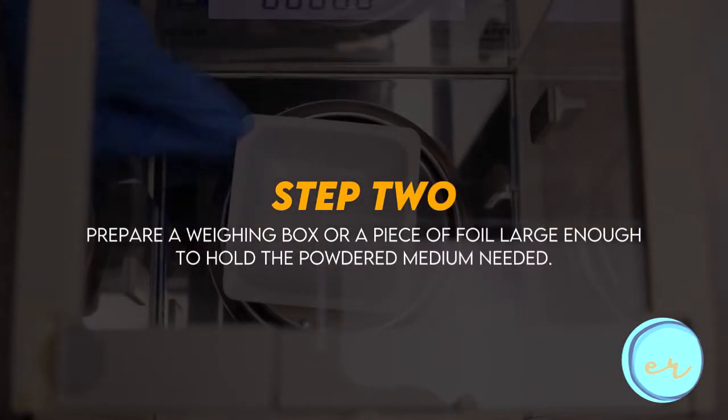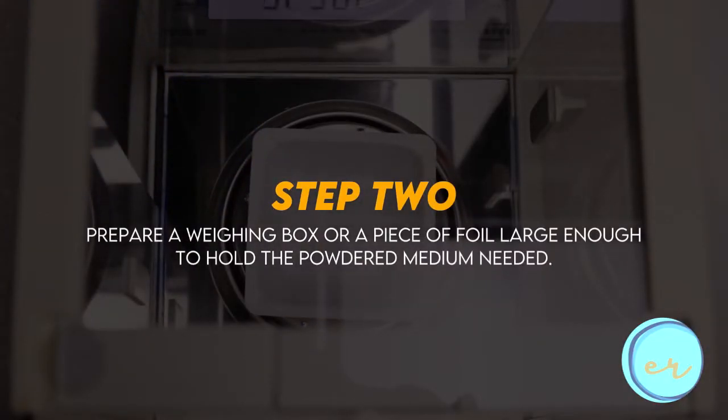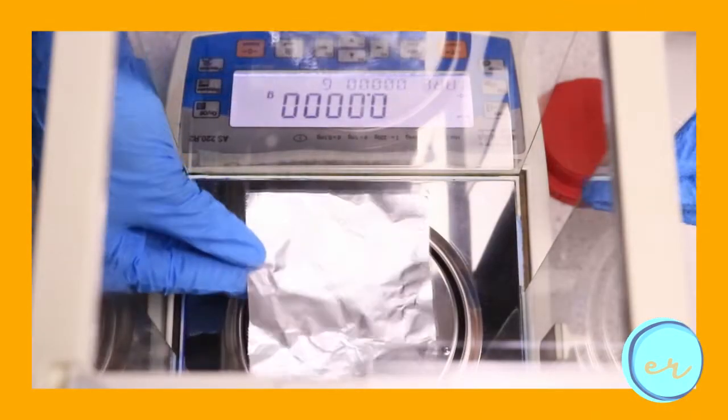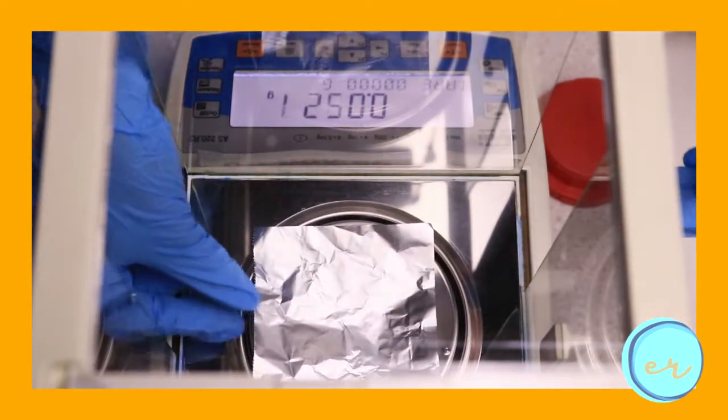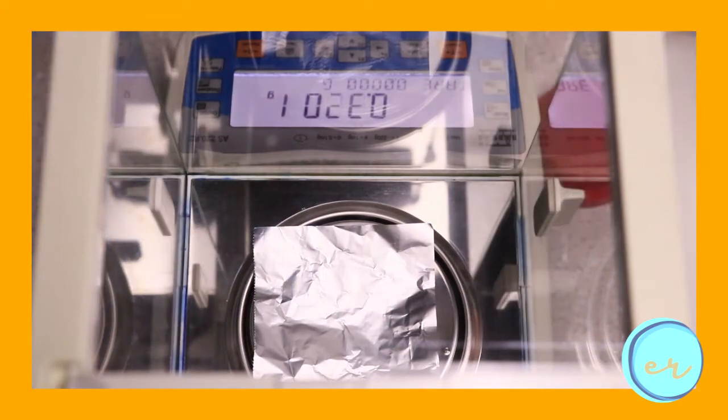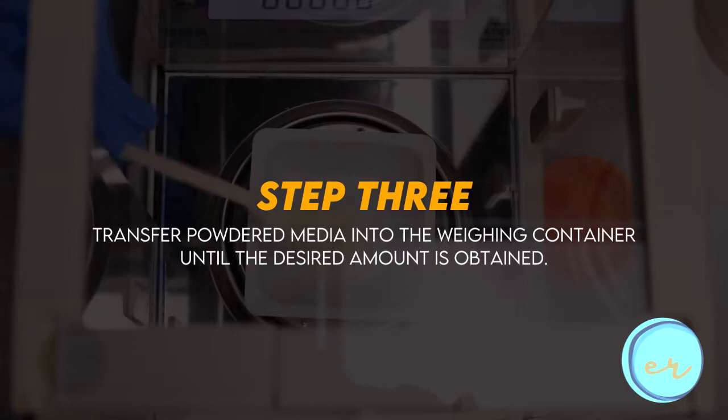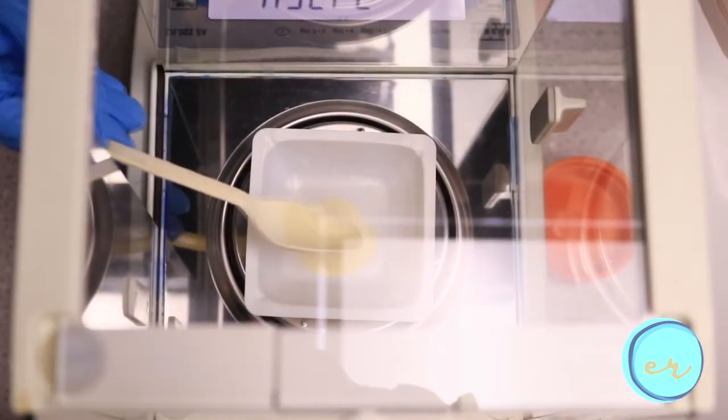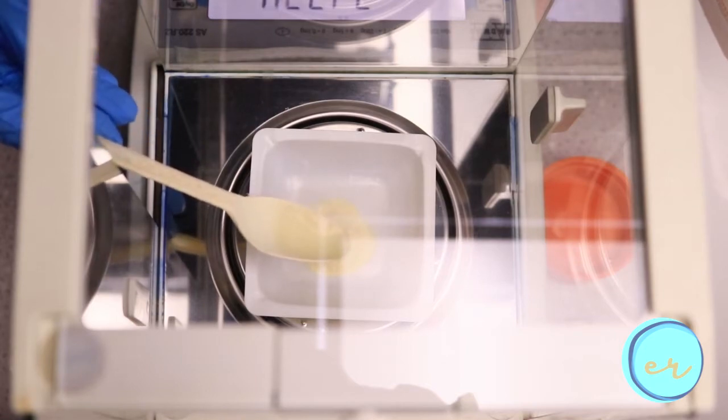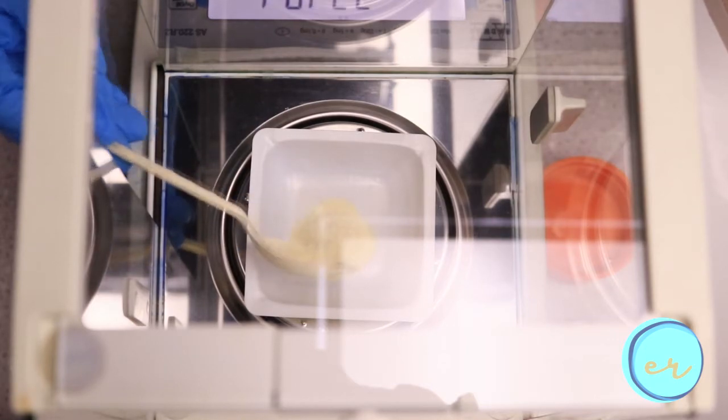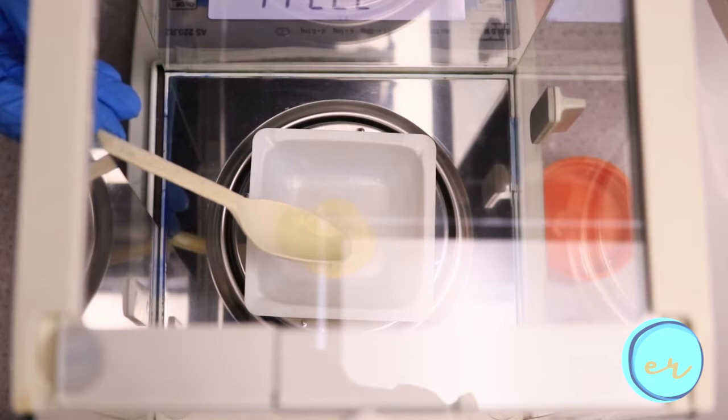In doing this, again, we take a weighing container or weighing box, or we can cut out a piece of aluminum foil or wax paper large enough to hold the amount of powdered medium that we need. We then transfer this weighed powdered medium using a dry spatula into this container. Again, avoid unnecessary exposure of the medium to the atmosphere because it is hygroscopic in nature.